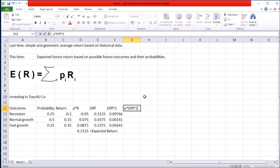And the next thing I have to do is multiply the probabilities by this squared difference. Probability times this squared difference. And copy the formula.